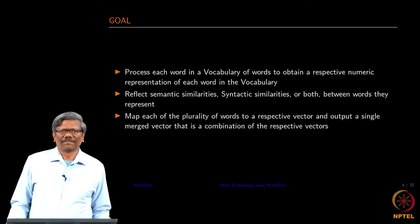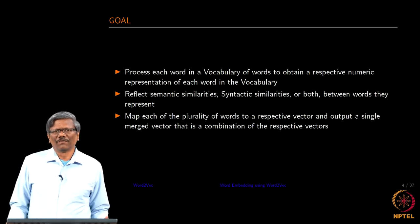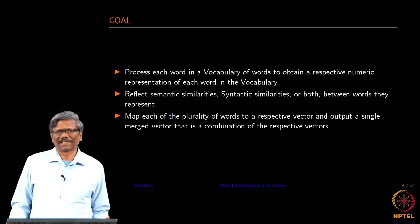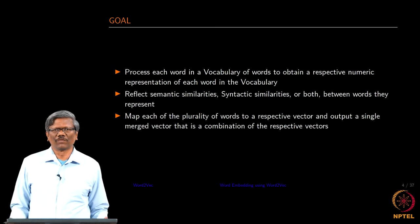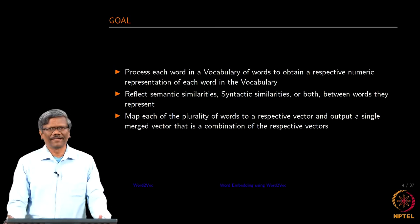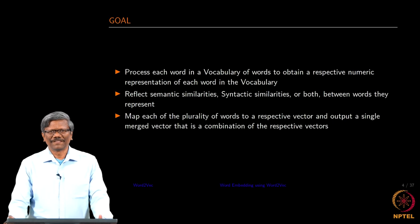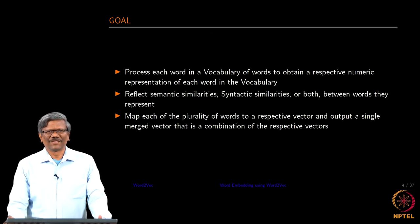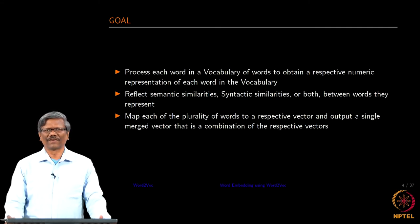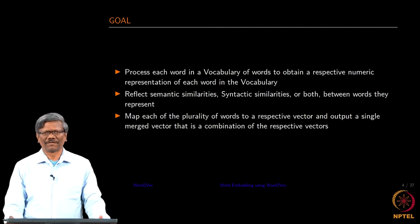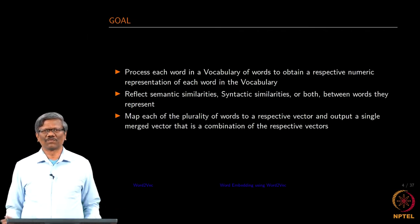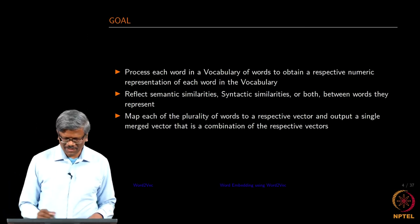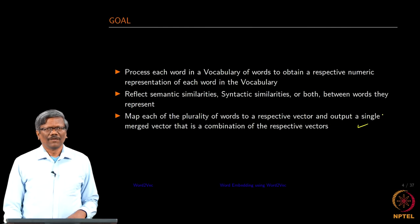We want to be able to reflect semantic similarities and capture syntactic similarities when we finish training the network — or can we capture both in one shot? We will try to map the plurality of each word to its respective vector and then see how we can merge the vectors, so that it is a combination of the respective vectors. We are trying to combine multiple similar words and represent them as one vector.